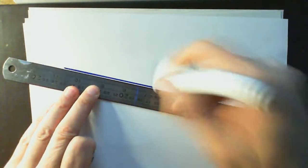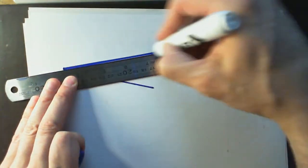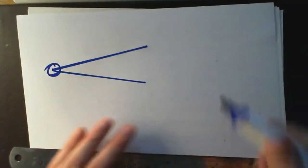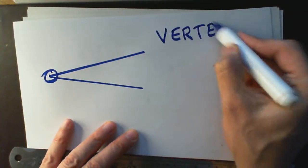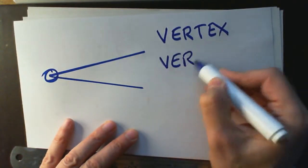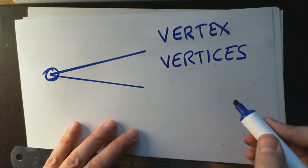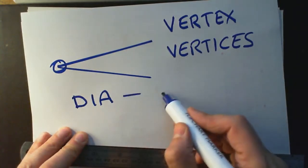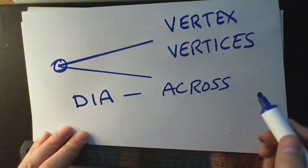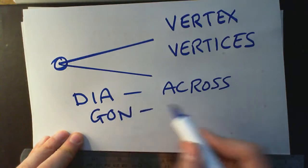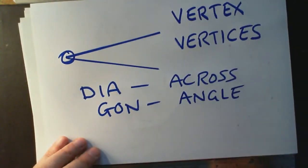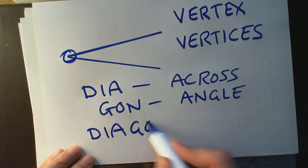Just to remind you of something we learned earlier: what is a vertex? A vertex is the summit — a corner point. We have one vertex, two vertices, three vertices, and so on. 'Dia' is a Greek word meaning 'across' — going from one side to the other. 'Gone' means angle. So 'diagon' means across the angle.